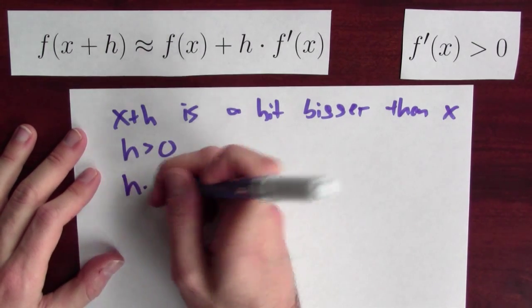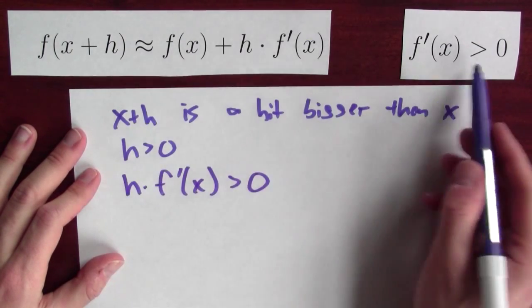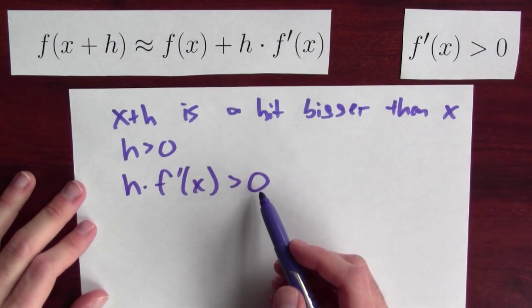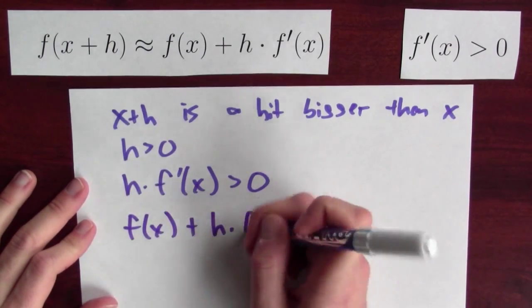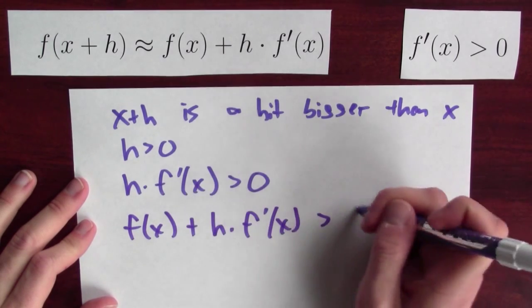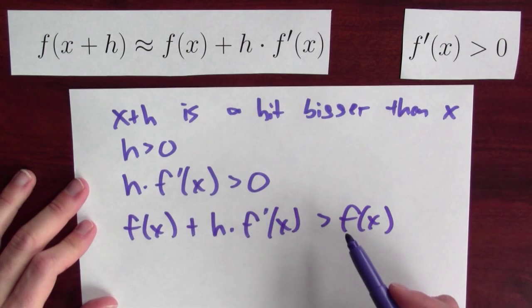Well, then h times f prime of x is going to be positive, because a positive number times a positive number is positive. And that means that f of x plus h times f prime of x will be bigger than f of x. I'm just adding something to both sides of this inequality.